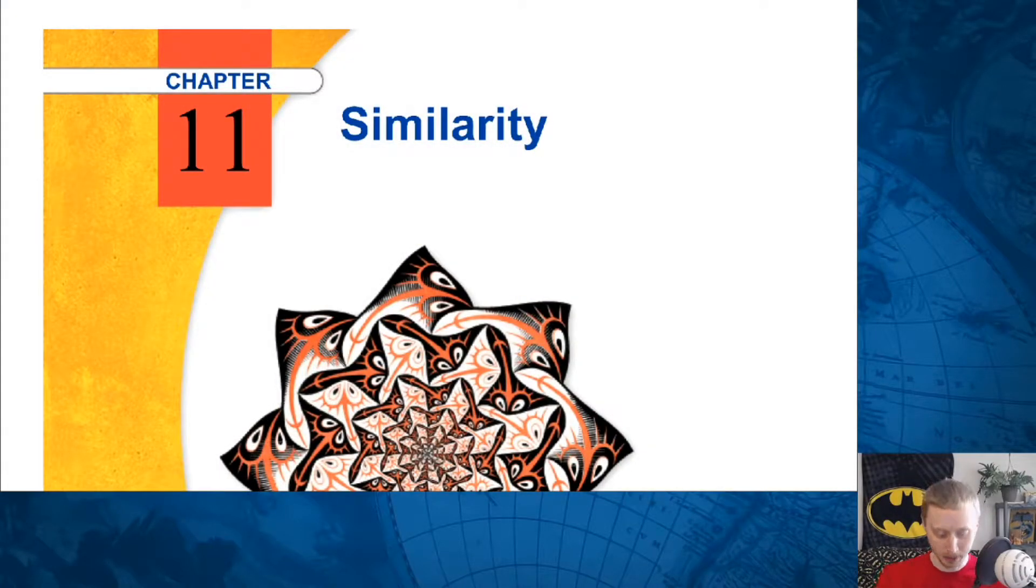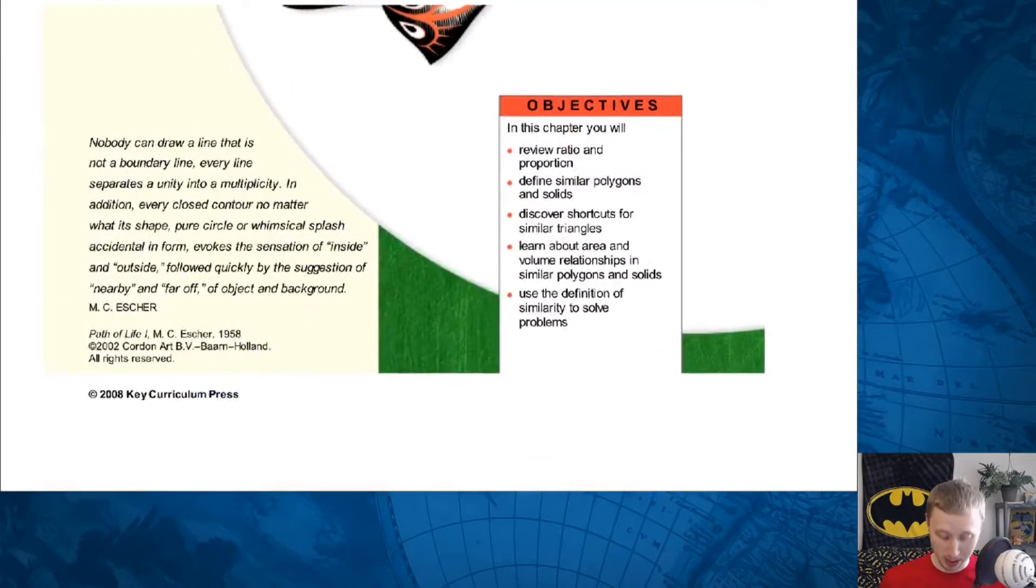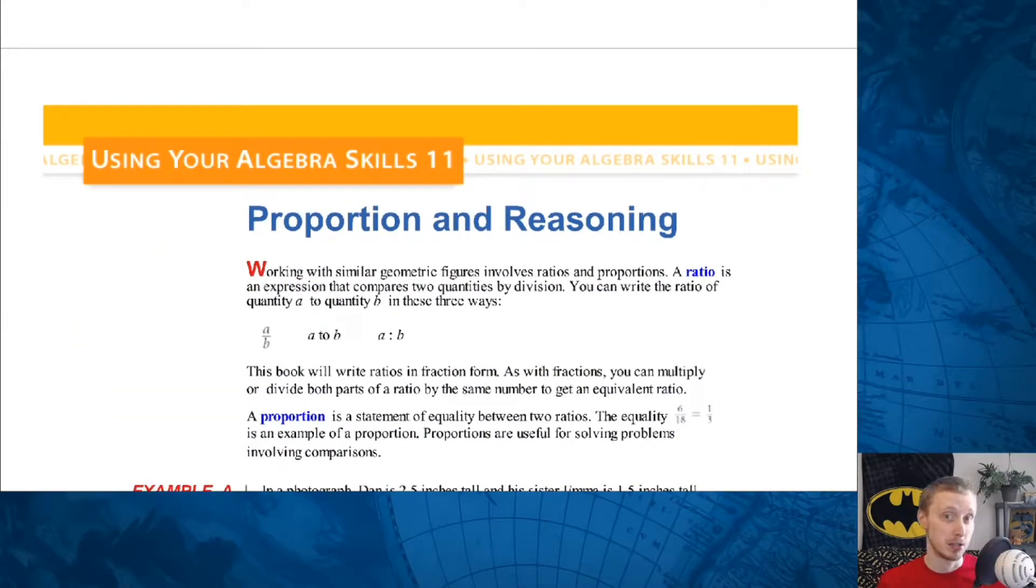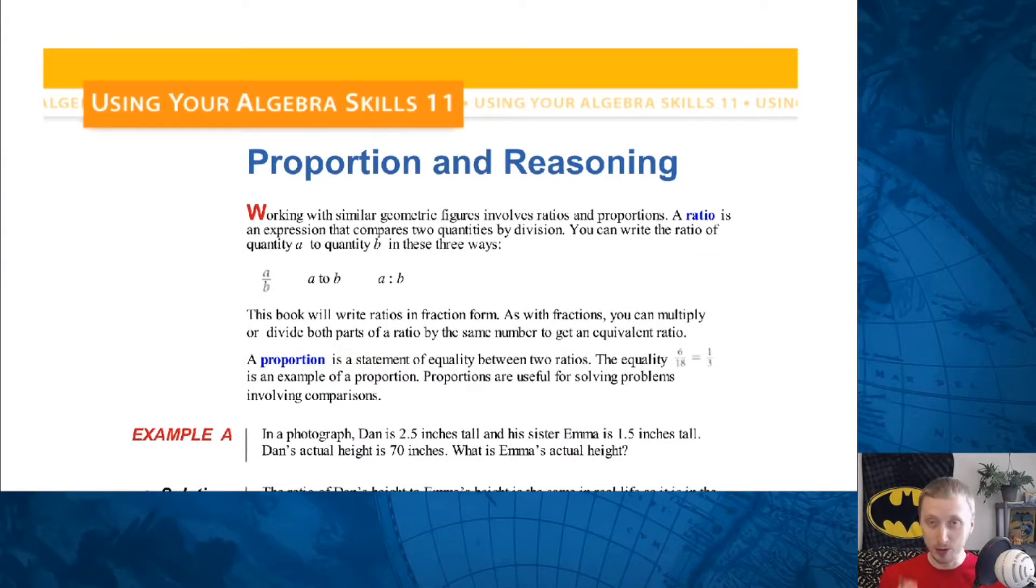Hello and welcome to another geometry guided notes video. Today we'll be starting chapter 11 similarity. Now a funny thing happened on the way to electronic textbook. 11.1 doesn't exist. We're just gonna pretend that never happened. But instead, and actually more importantly, we have the using your algebra skills proportion and reasoning section. And I really want to utilize this kind of in lieu of an official 11.1.